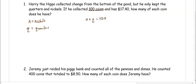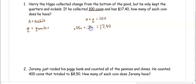We know that he has $17.40, so we want to equal $17.40. We need to include the value of each type of coin. A nickel is $0.05, so 0.05N. A quarter is $0.25, so 0.25Q.